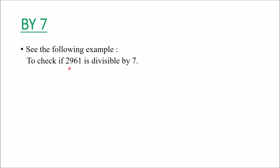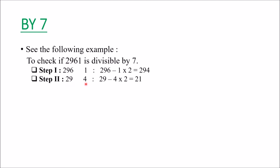Now let us see the divisibility test of 7. Let us take the example 2961 and check if it is divisible by 7. We do this in two steps. First, split 2961 into two parts: 296 and 1, and subtract double of 1 from 296, giving 296 minus 2 equals 294. In the second step, split 294 into 29 and 4, then subtract double of 4 from 29: 29 minus 8 equals 21. Since 21 is divisible by 7, the whole number 2961 is divisible by 7.